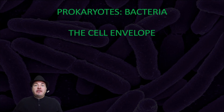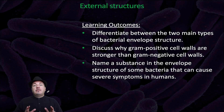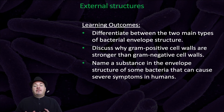Dr. Sage here. In this video, we're going to continue discussing the external structures of the bacteria and delve into the cell envelope. By the end of this video, you should be able to differentiate between the two main types of bacterial envelope structure, discuss why gram-positive cell walls are stronger than gram-negative cell walls, and name a substance in the envelope structure of some bacteria that can cause severe symptoms in humans.